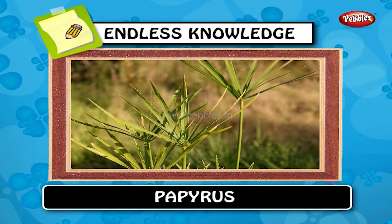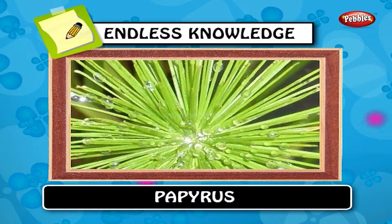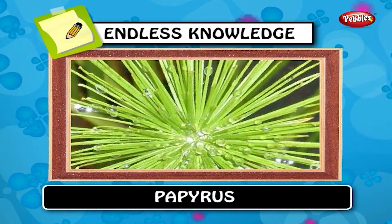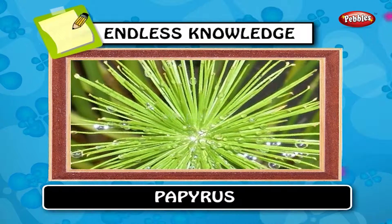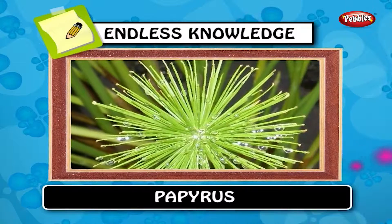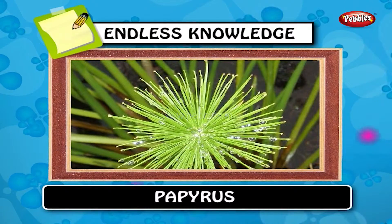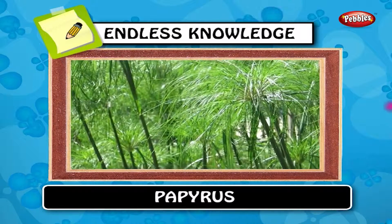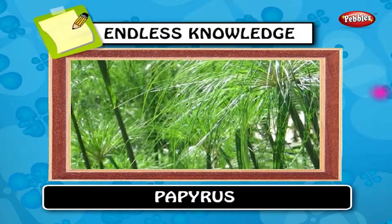Papyrus. Papyrus is a thick paper-like material produced from the pith of the papyrus plant, Cyperus papyrus. Papyrus usually grows 2 to 3 meters tall.